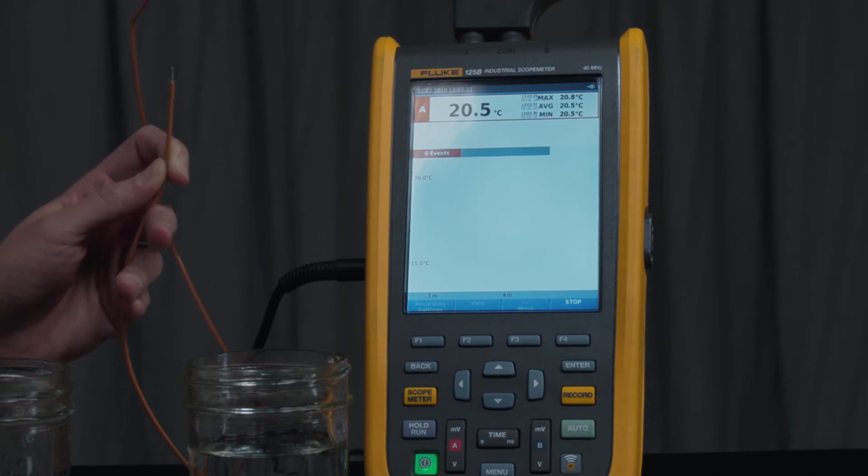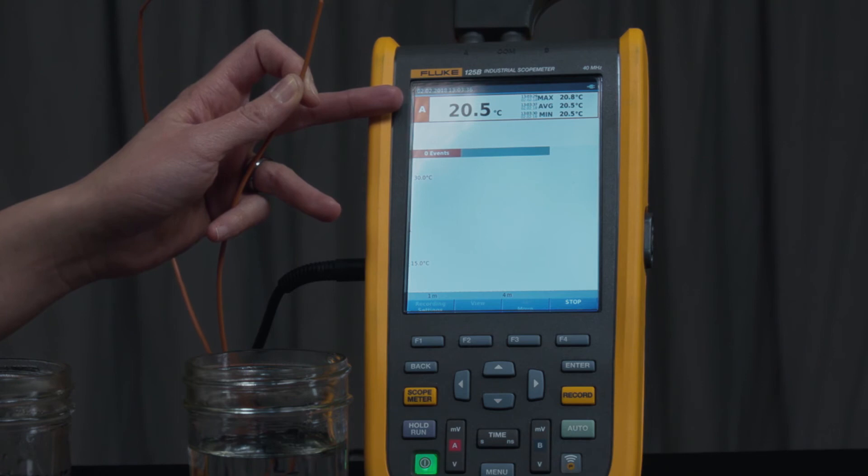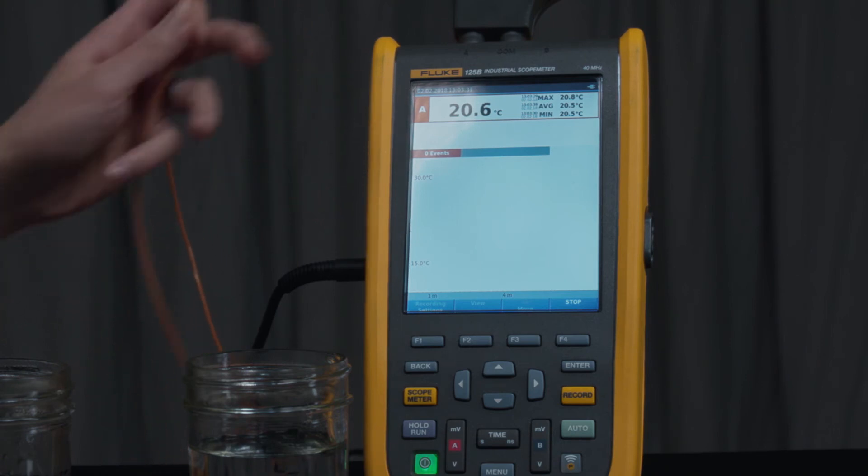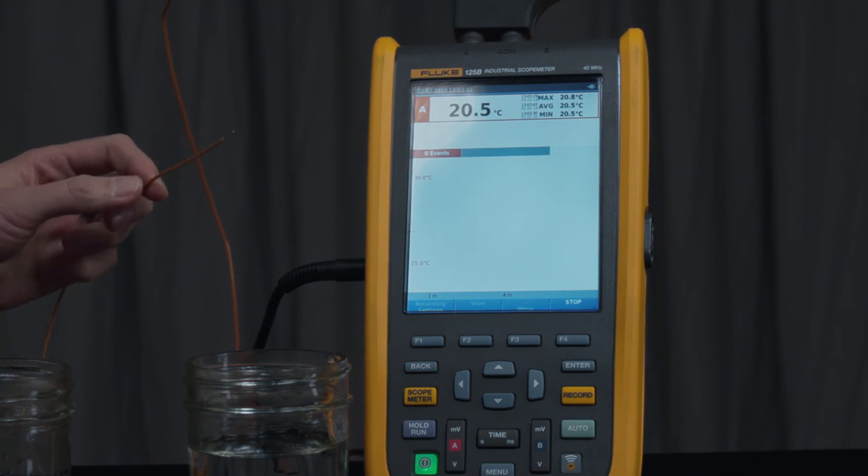So you hear the beeping every time there's a new min and max. Right now, we're at room temperature, which is roughly 20.5 degrees C. And you can see the max, average, and min there, like we did when we were measuring voltage and current.